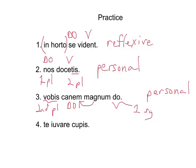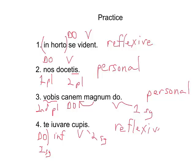Fourth sentence: 'te iuvare cupis.' 'Te' is the direct object, 'iuvare' is a complementary infinitive, and 'cupis' is the verb. 'Cupis' is second singular, and 'te' is also second singular — so that is reflexive. Those are the same person. It's reflexive.